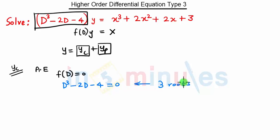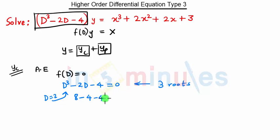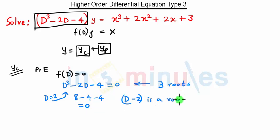Is there any way to find these roots? If you observe this equation closely, when we put D = 2, we get 8 minus 2×2 = 4, minus 4, so the equation turns out to be 0. That means D = 2 is a root of this equation.